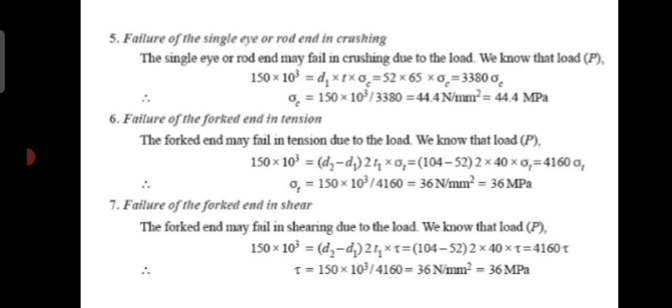Failure of the single eye or rod end in crushing. The rod end may fail in crushing due to the load. The formula is P equal to d1 × t × sigma C. Substituting P equal to 150 × 10³, d1 equal to 52, and t equal to 65, we find sigma C equal to 44.4 N per mm², that means 44.4 MPa.